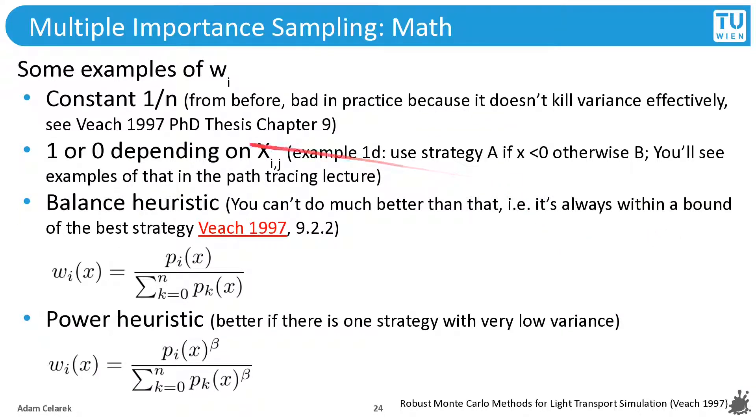So to wrap up, we can use MIS even when we have several sampling strategies that don't produce an unbiased result, each on their own. Okay, what are choices for this weighting? It can be constant 1 over n. This is what our sanity check said just before, and this is the naive approach of just averaging over all of the sampling strategies. It can also be 1 or 0, depending on the x.